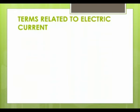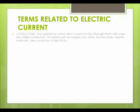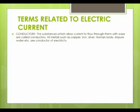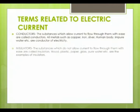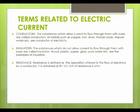There are some terms related to electric current. Conductors are substances which allow current to flow through them with ease. All metals such as copper, iron, silver, the human body, and impure water are conductors of electricity. Insulators are substances which do not allow current to flow through them. Wood, plastic, paper, glass, and pure water are examples of insulators.